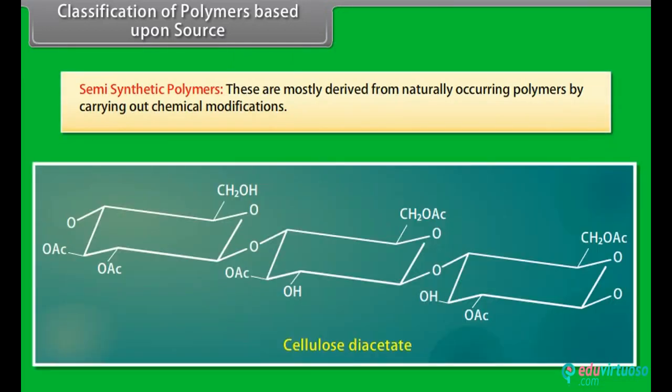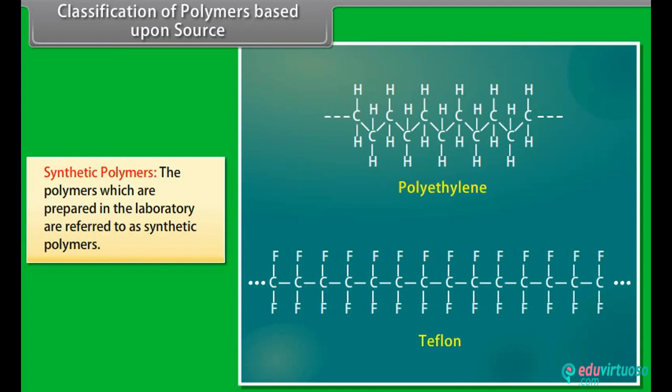Semi-synthetic polymers: these are mostly derived from naturally occurring polymers by carrying out chemical modifications. For example, cellulose diacetate. Synthetic polymers: the polymers which are prepared in the laboratory are referred to as synthetic polymers. For example, polyethylene, synthetic rubber, nylon, PVC and Teflon.